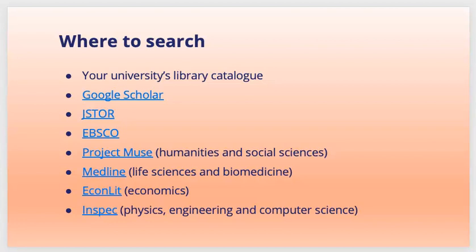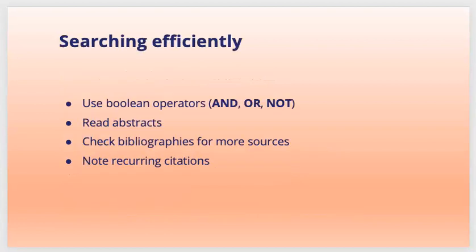Scopus is a great source for finding relevant research papers and journals. There are a few tricks to search efficiently. First, use Boolean operators — capitalized terms like AND, OR, and NOT — to exclude or require certain terms in your results. Read abstracts of research papers. Check bibliographies for more sources; if you find a good research paper, its bibliography can lead you to related papers. Also note the citation count, as more cited papers tend to be more influential resources.